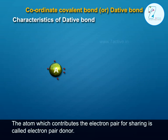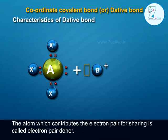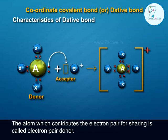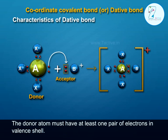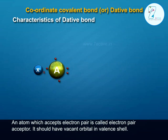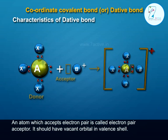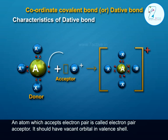The atom which contributes the electron pair for sharing is called the electron pair donor. The donor atom must have at least one lone pair of electrons in its valence shell. The atom which accepts the electron pair is called the electron pair acceptor, and it should have a vacant orbital in its valence shell.